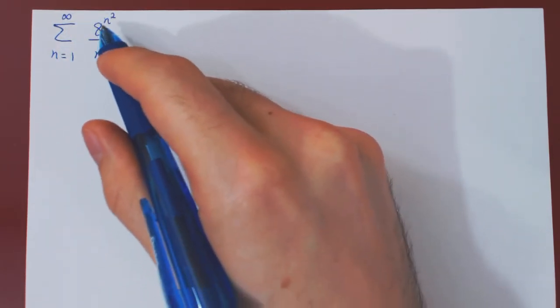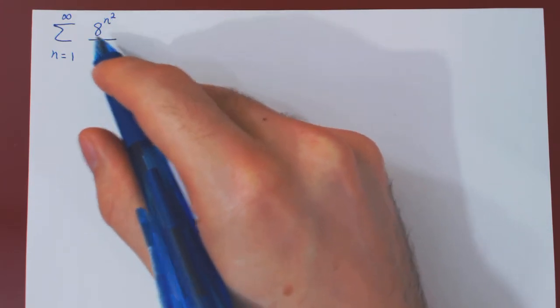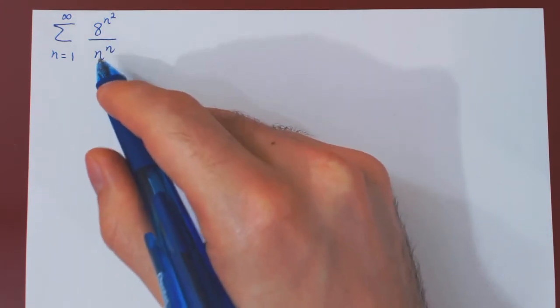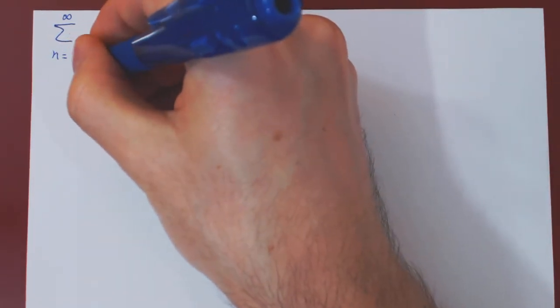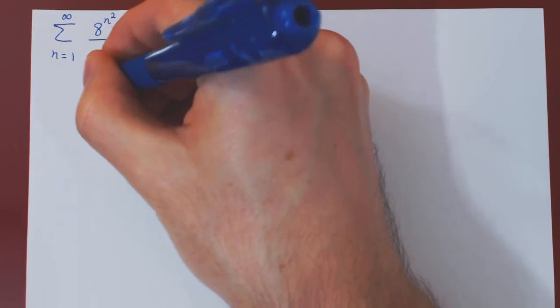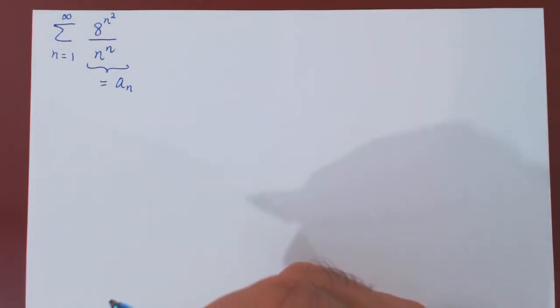As we have an exponential function with base 8, 8 to the n squared, and also n to the n, we could use here the ratio or the root test. In this video, we will be using the root test. As an exercise, feel free to tackle the problem with the ratio test.